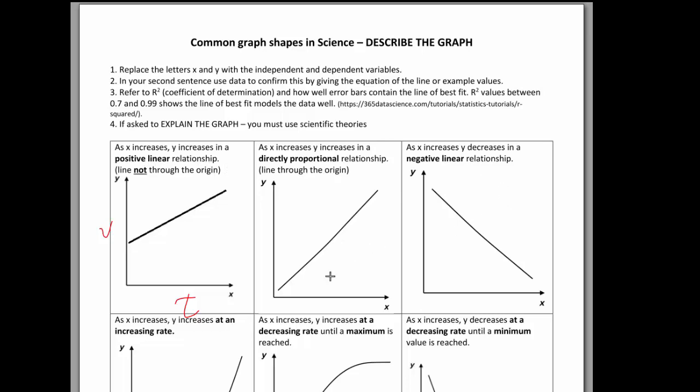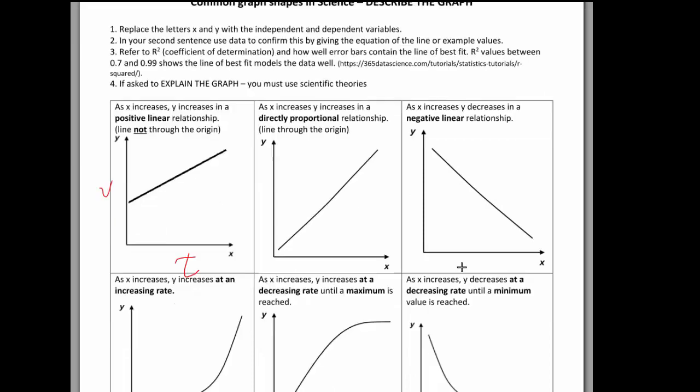So as time increases, the volume increases in a positive linear relationship. If the graph goes through zero, use directly proportional. If it's going down, say negative linear.